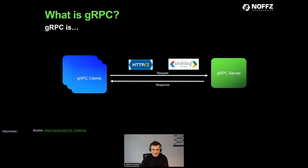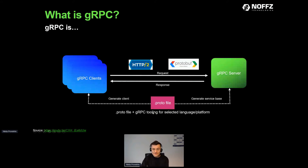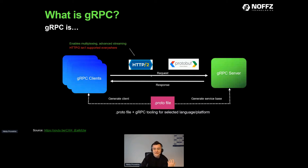Together, HTTP/2 and Protobuf give you gRPC. The architecture has a server on the right and clients on the left — remote procedure calls work as request/response over HTTP/2, which handles security and authentication. Protobuf serializes and deserializes the data. It all starts with the protofile — a contract from which you automatically generate server DLLs or classes and client code.